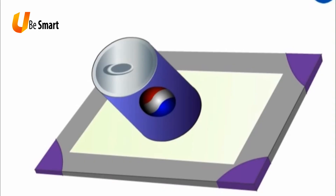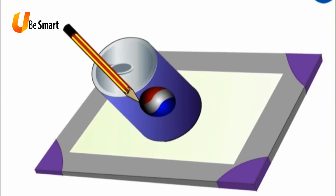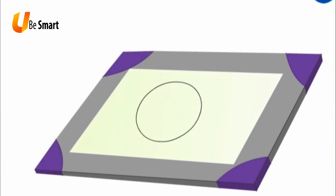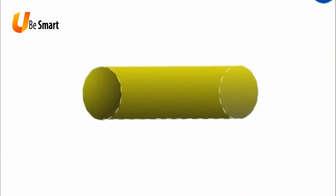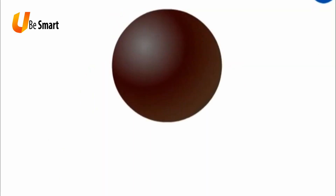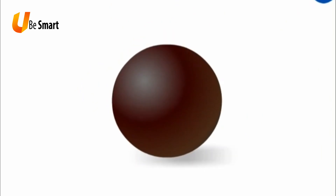Drawing a circle from a cylinder. Take a cylindrical shaped object like a Pepsi can. Put it on a paper. Run a pencil along the flat face of the Pepsi can. We get a circle. A circle has no sides or corners. A cylinder has one curved face, two plain faces and no sides or edges.